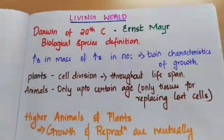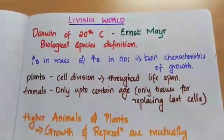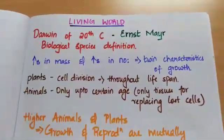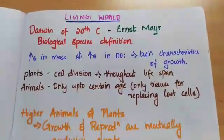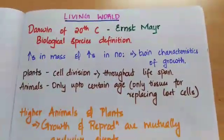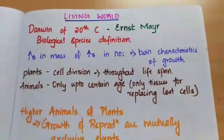Ernest Mayer is known as the Darwin of the 20th century. He gave the definition of biological species.